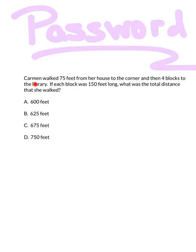So, let's take a look at our password for tonight's lesson. Tonight's word problem password says, Carmen walked 75 feet from her house to the corner and then 4 blocks to the library. If each block was 150 feet long, what was the total distance that she walked? A, 600 feet. B, 625 feet. C, 675 feet. Or D, 750 feet. Be sure you work this out. Record your answer and how you worked it out in your math journal and bring it with you to class tomorrow. We'll see you then.